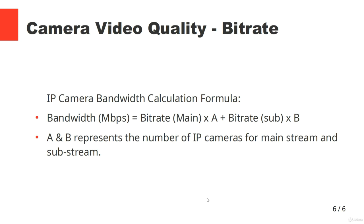For the IP camera bandwidth calculation formula, you take the bitrate from the mainstream — around 2000 kilobits — and multiply by the number of cameras. Then you add the substream bitrate, around 1024 kilobits, also multiplied by the number of cameras. Adding them together gives you the total required bitrate for your system.